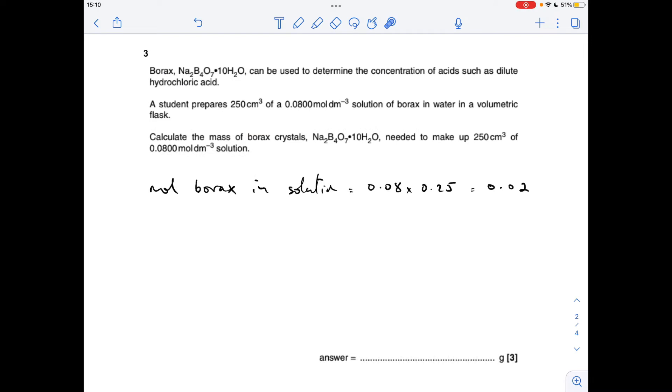Next question: so the first thing we'll do is calculate the moles of borax that are going to be needed in this solution, so the concentration times the volume is 0.02 moles. Then we just need to convert to grams, so it's moles times MR: 7.62 to three significant figures.